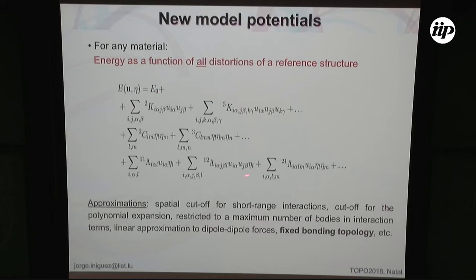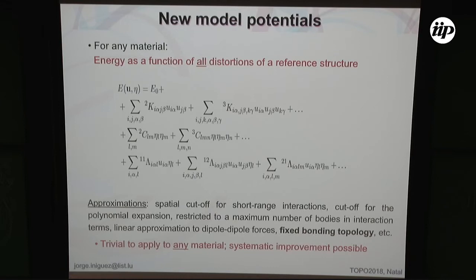Of course these potentials must be truncated at some order of expansion — that's an approximation, but one that can be automatically improved. I also truncate the spatial extension of interactions, again an approximation that can be improved very easily. I can use symmetry to reduce the number of nonzero couplings. It's very advantageous. We still cannot break bonds — this is still a quasi-perturbative approach — but if we remain without breaking bonds, this is a great simplification.